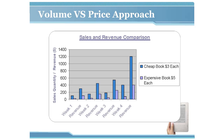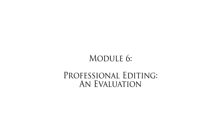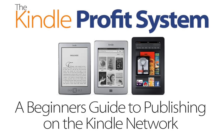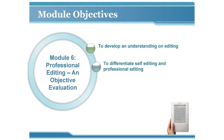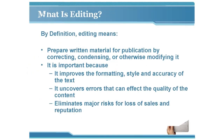Learning module six: Professional editing — an objective evaluation. Your module objectives are to develop an understanding on editing and to differentiate self-editing from professional editing. By definition, editing means preparing written material for publication by correcting, condensing, or otherwise modifying it. It improves formatting, style, and accuracy of text, uncovers errors that can affect quality, and eliminates major risks for loss of sales.